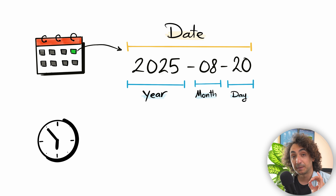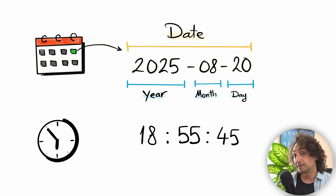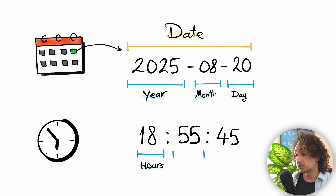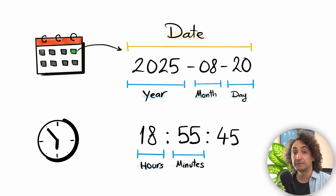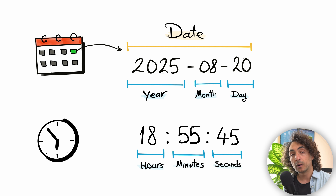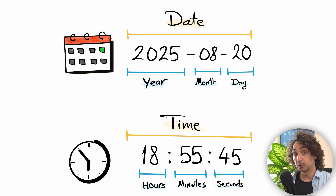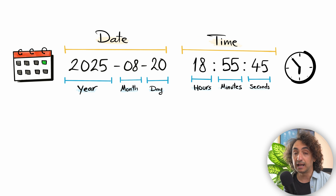Now what is time? Time refers to a specific point within a day — for example, 18 hours, 55 minutes, and 45 seconds. This structure also has three components: the hours, a number between 0 and 23; the minutes, a number between 0 and 59; and the seconds, also between 0 and 59. We call this structure in databases a time. Now, if you combine both the date together with the time and put them side by side, you get a new structure.